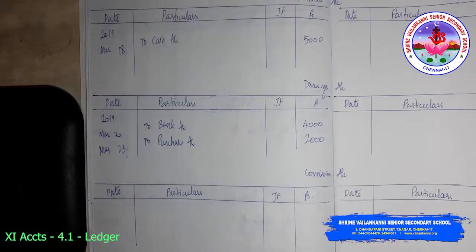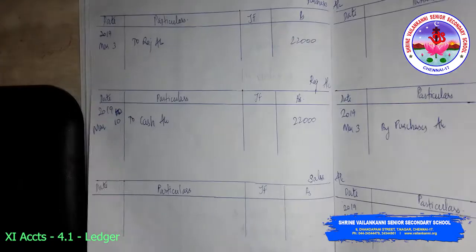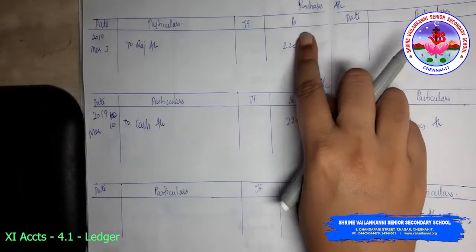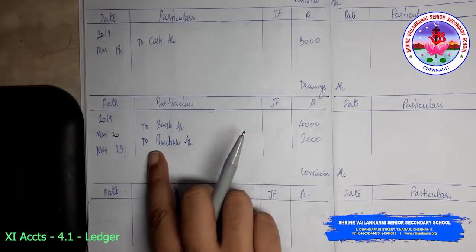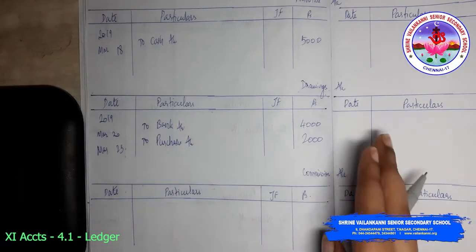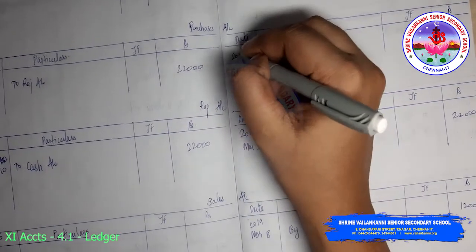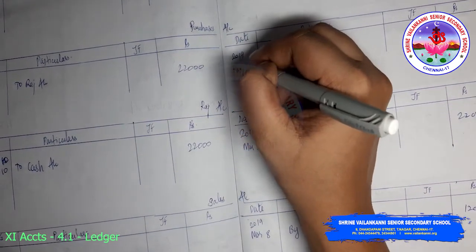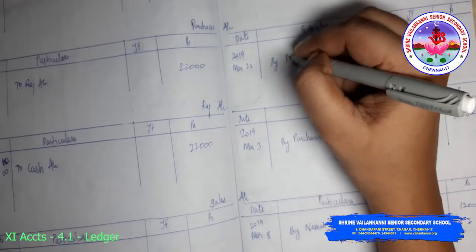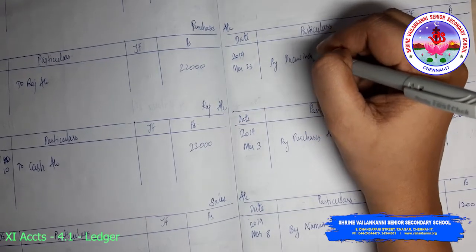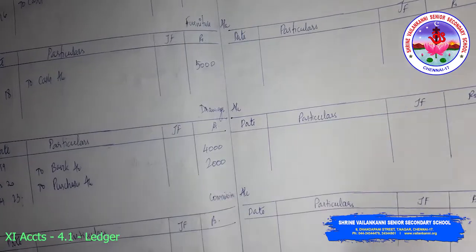Similarly, in purchases account — since it is drawings to purchases, so by drawings you have to write. By drawings, March 23rd, 2000.